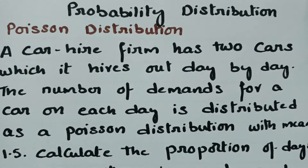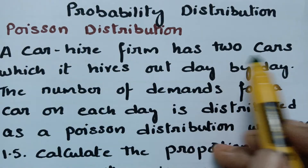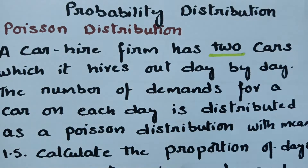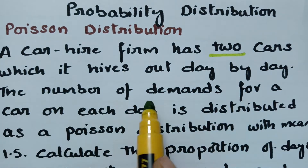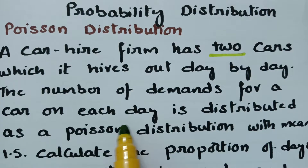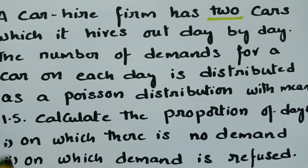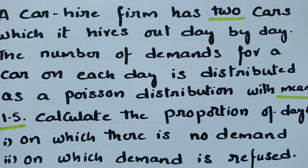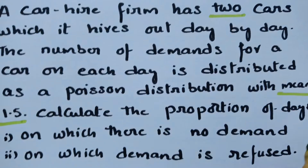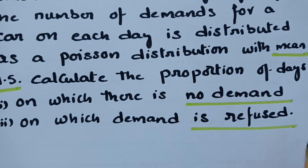Today's video is on Poisson distribution from probability distribution. A car hire firm has two cars which it hires out day by day. The number of demand for the car on each day is distributed as Poisson distribution with mean 1.5. We need to calculate the proportion of days on which there is no demand, and on which the demand is refused.